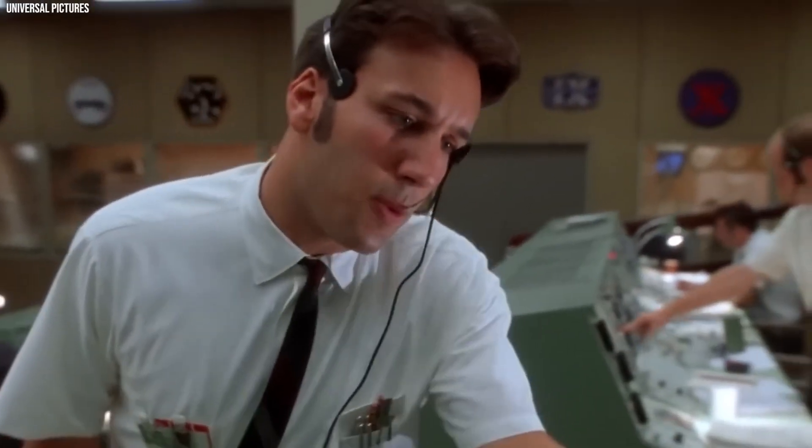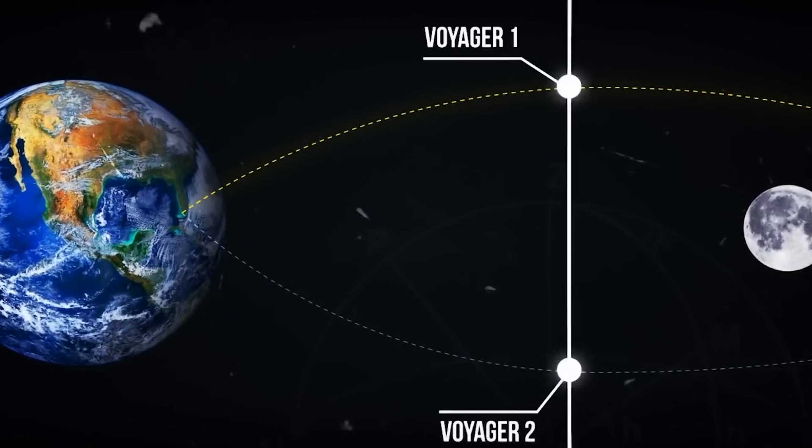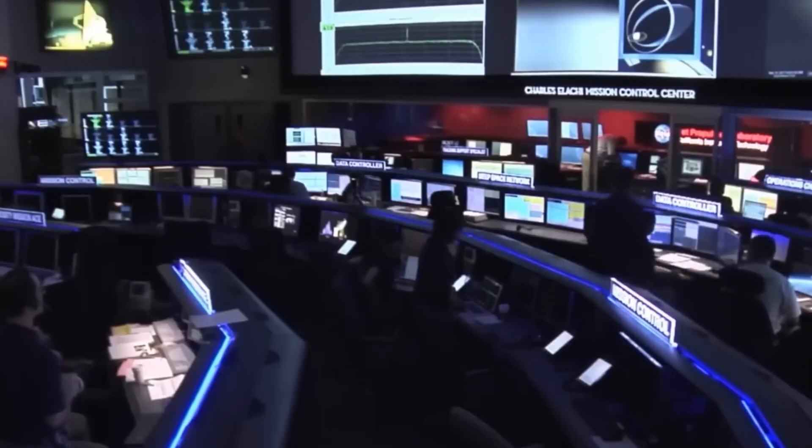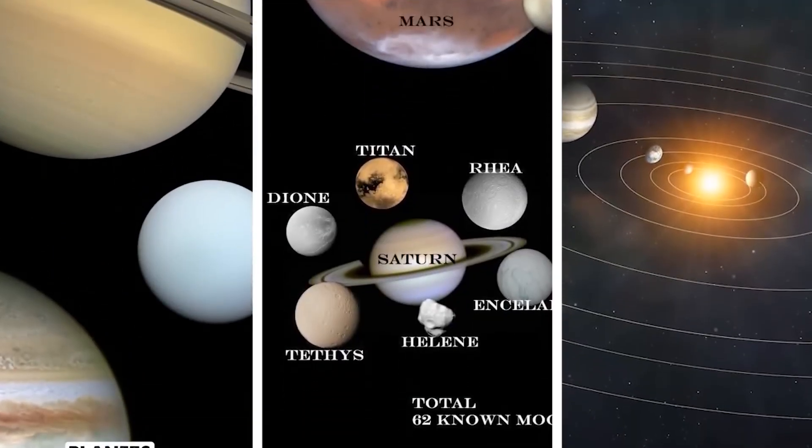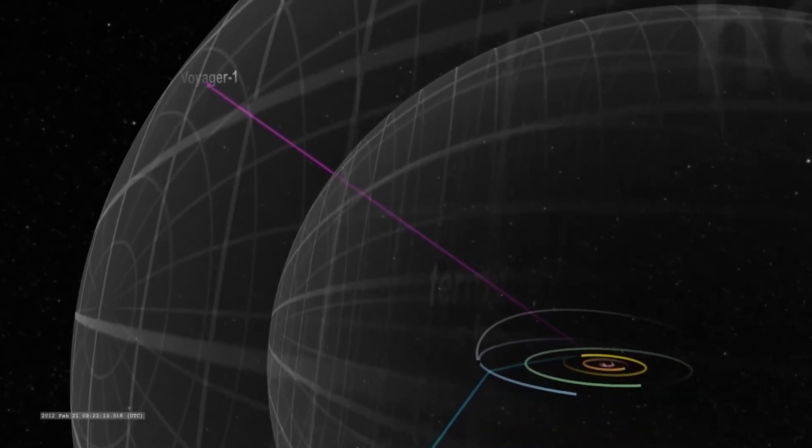Voyager 1 and Voyager 2 in the summer of 1977, with the aim of taking advantage of this cosmic alignment. Little did they know that these twin explorers would break all records in the history of space missions.